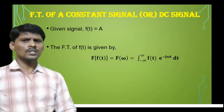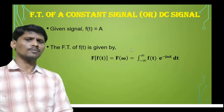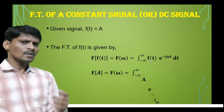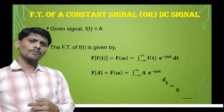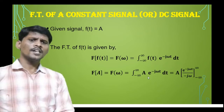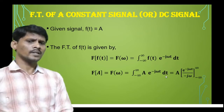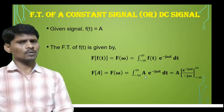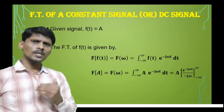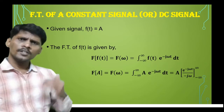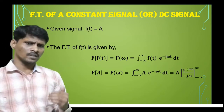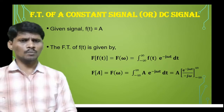Now here, what is the signal f(t)? The signal f(t) is constant. So F(ω) equals the integral from minus infinity to infinity of A into e to the power minus jωt dt, where A is a constant written before the integration. The integral of e to the power minus jωt is e to the power minus jωt divided by minus jω, evaluated from minus infinity to plus infinity.